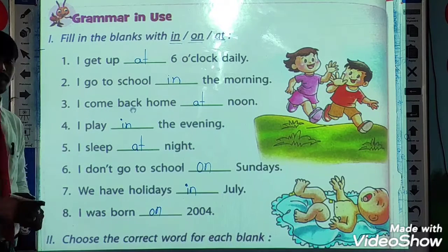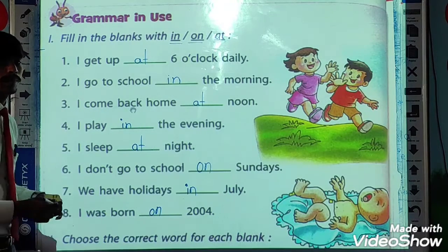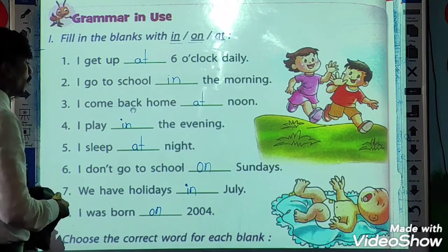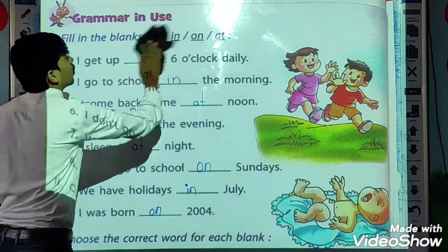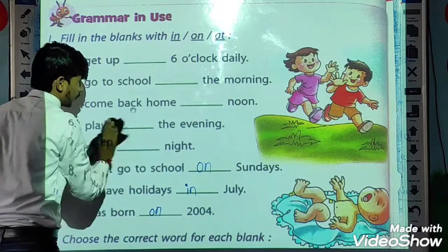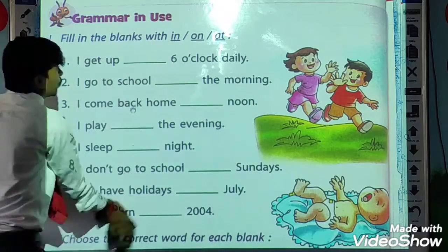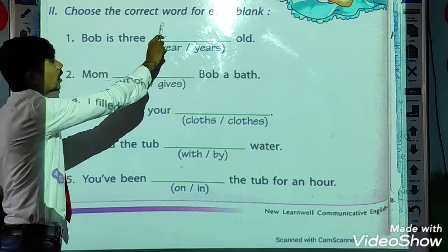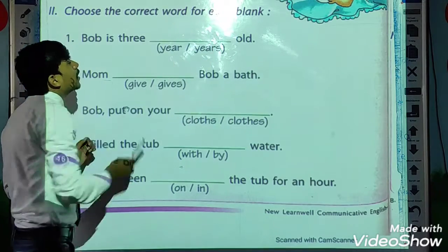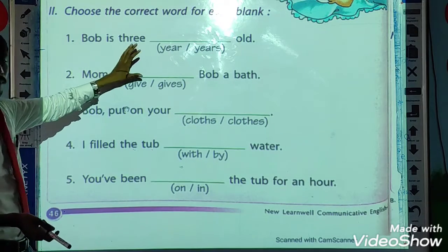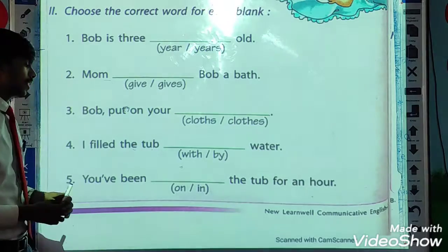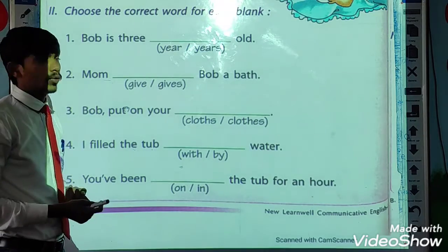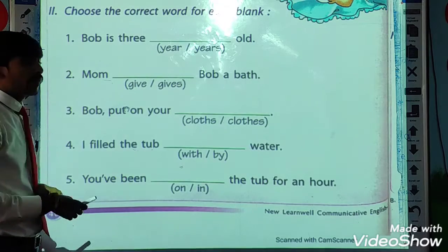So that was the first exercise. Hope you have understood this. Now we go to our next question. Choose the correct word for each blank. There are some blanks and some words are given. We have to choose the correct word for each blank.